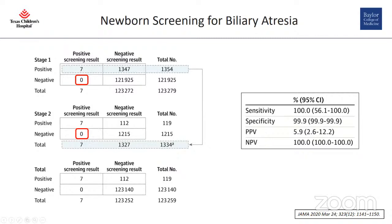A follow-up study by the same group published in JAMA in 2020, about four to five years later, implemented this protocol not only at our institution but also at neighboring institutions, as an attempt at statewide implementation of early BA screening using a simple test for conjugated hyperbilirubinemia. Again, sensitivity was very good and specificity was good enough, making this a very good test for newborn screening of BA.